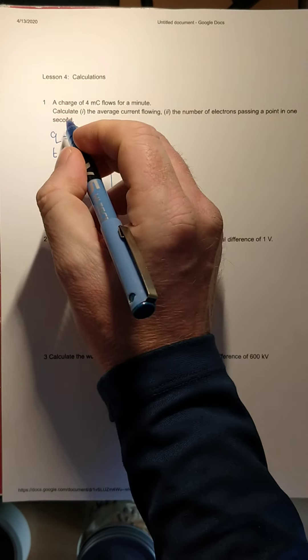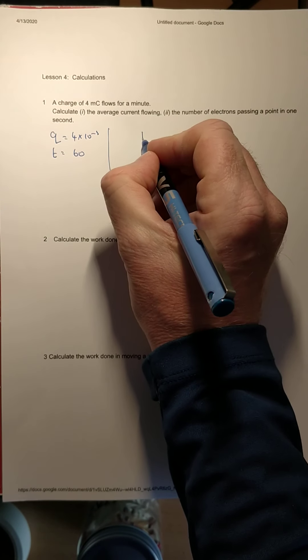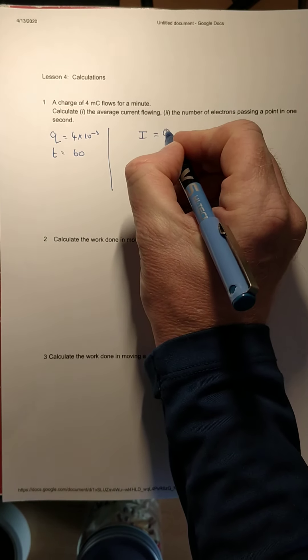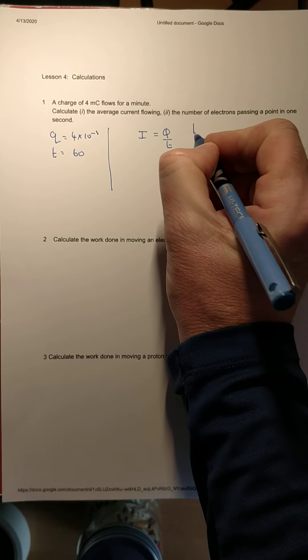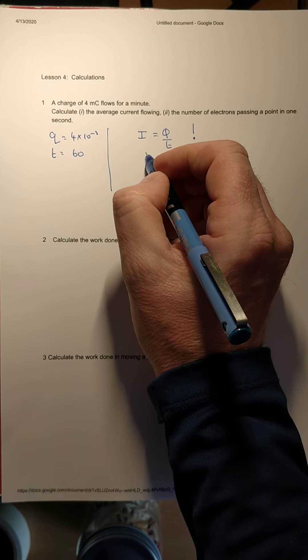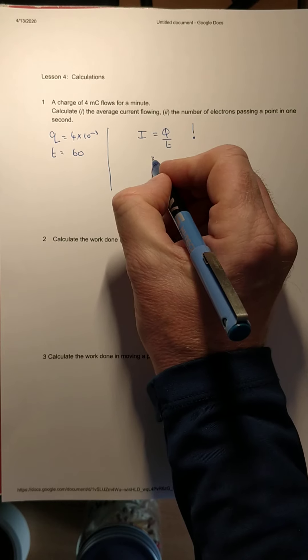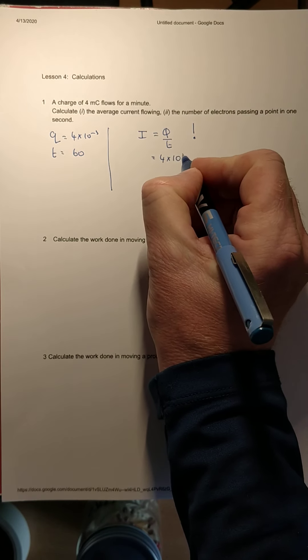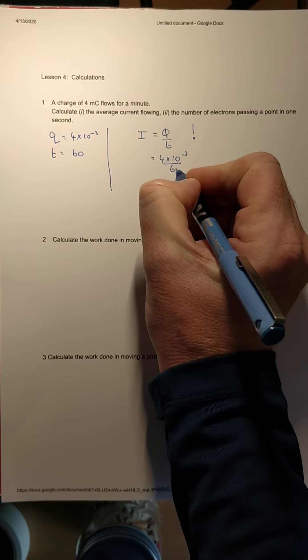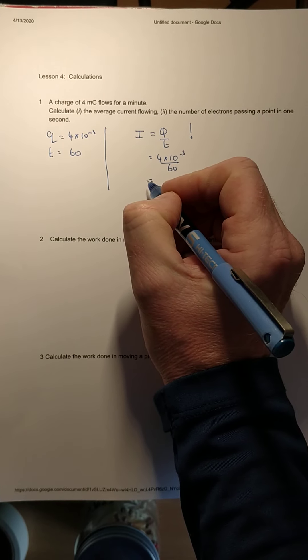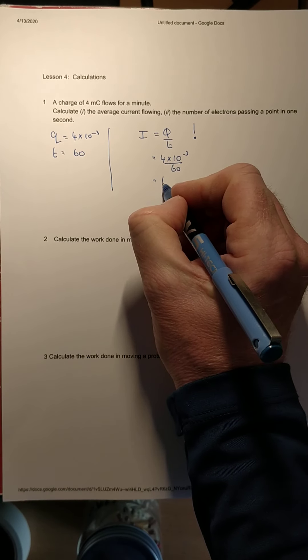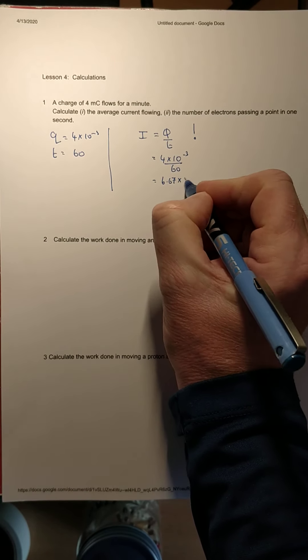For the current flowing, current is charge divided by time. Be aware that's not in the tables, so we need to know it. So charge is 4 × 10⁻³ divided by the time which is 60, so we get a current of 6.67 × 10⁻⁵ amps.